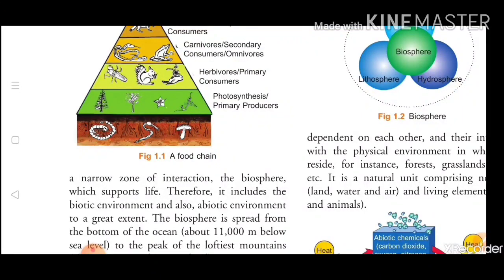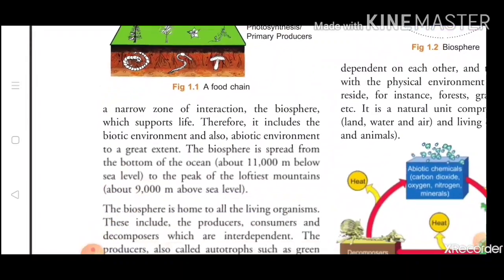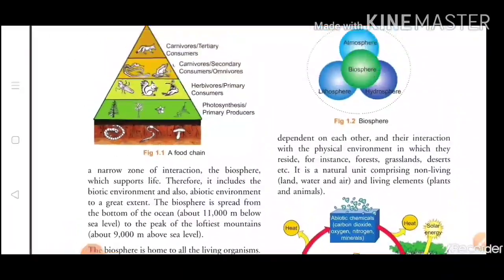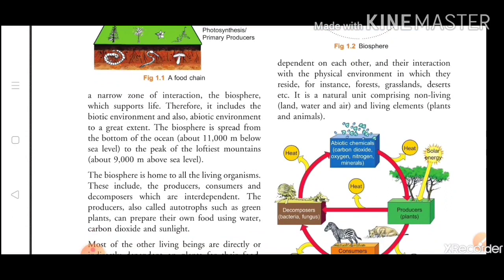The food chain is very important and it should not break. So I hope you have all understood: what is a producer — we also call producers autotrophs; what are consumers — we call them heterotrophs; consumers are of three types: herbivores, carnivores, and omnivores. Decomposers are those that break down the dead bodies of animals and plants — for example, bacteria.